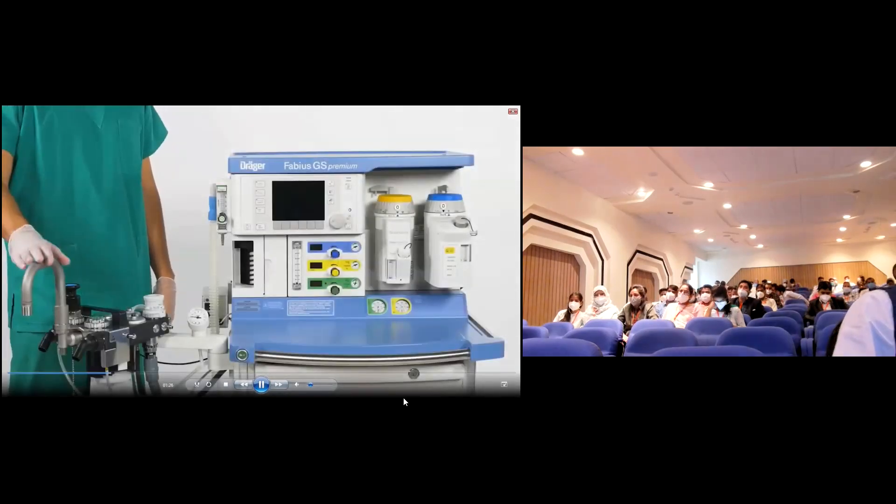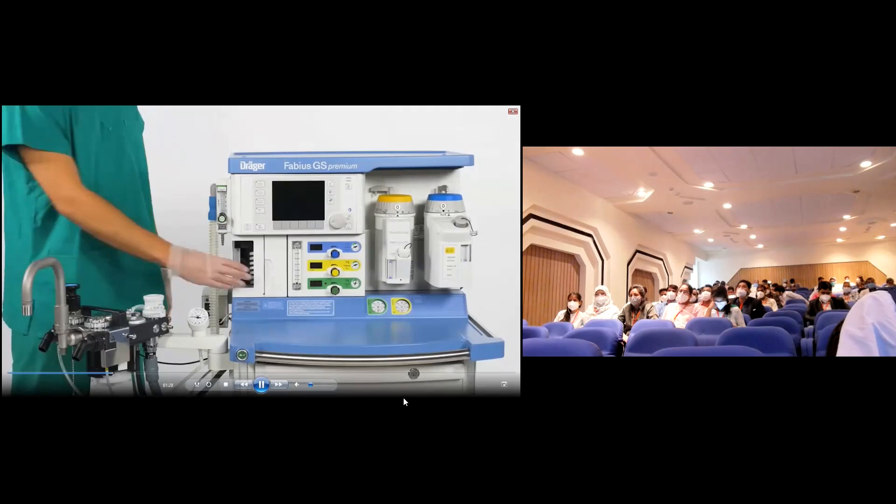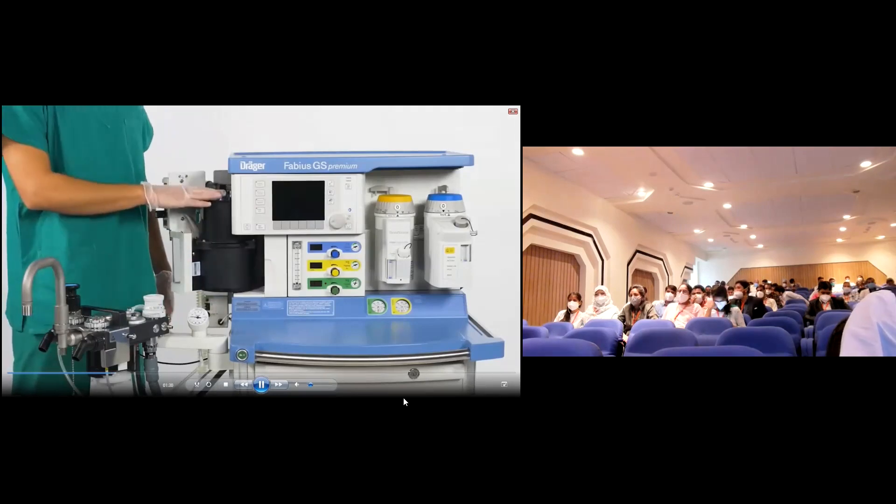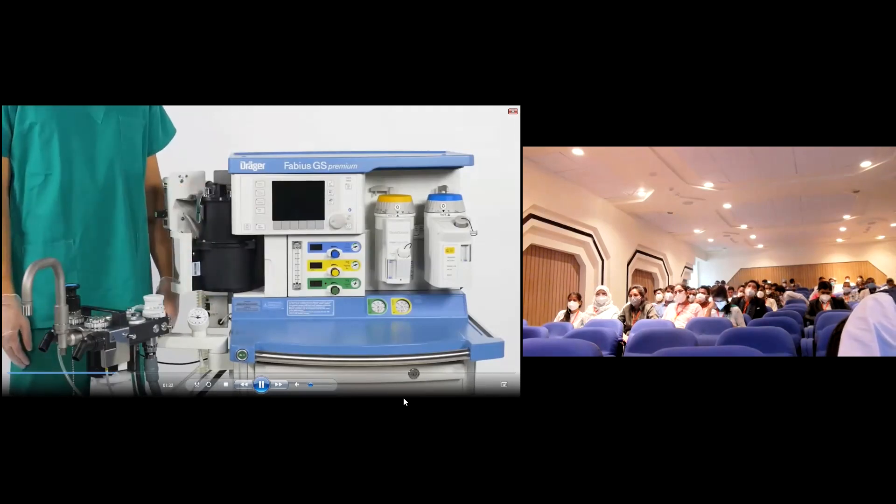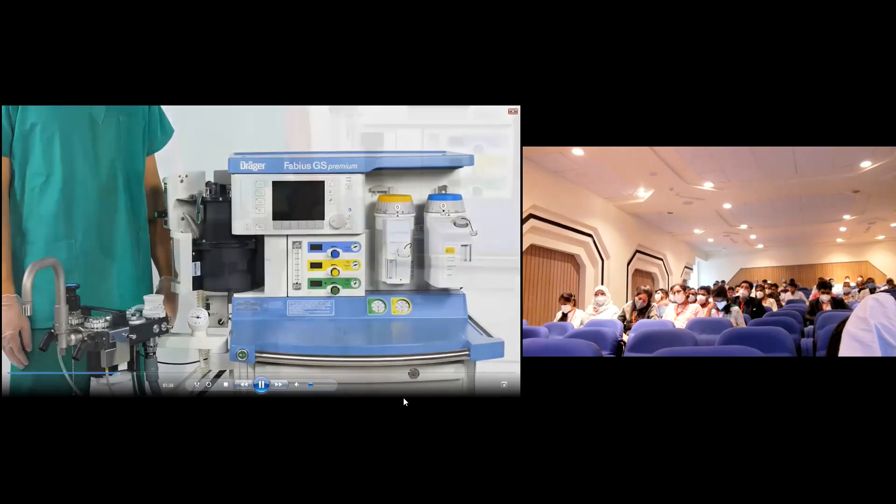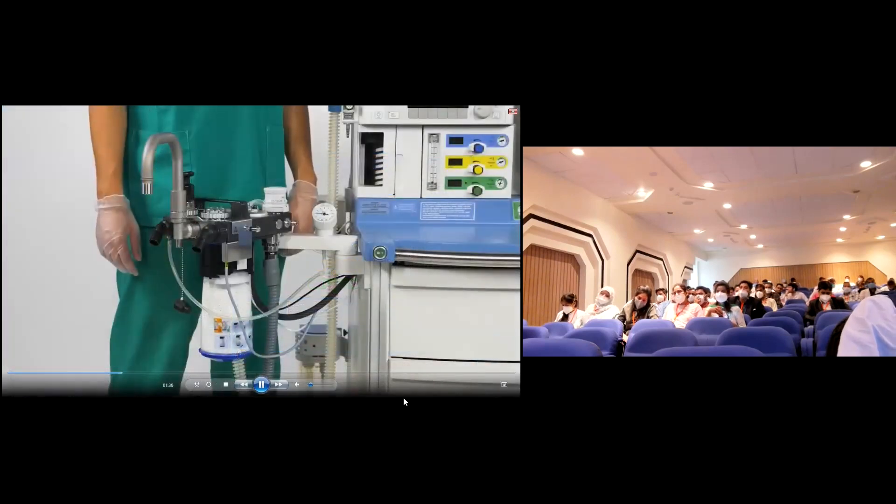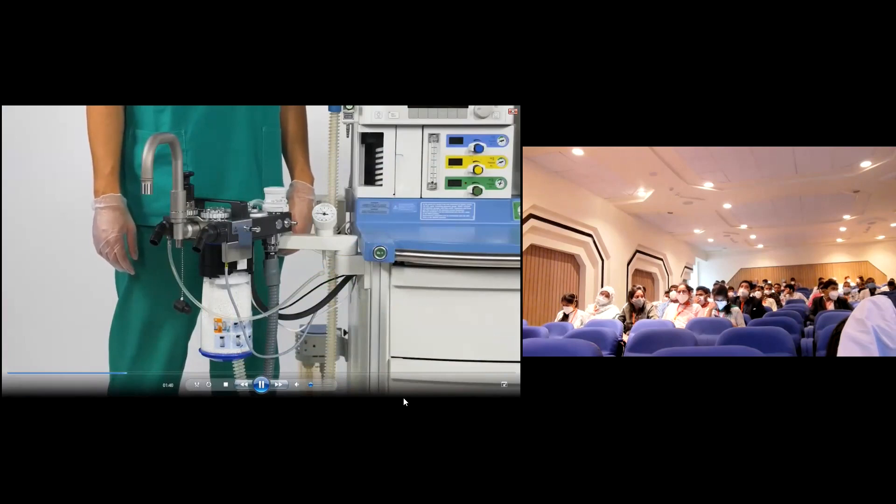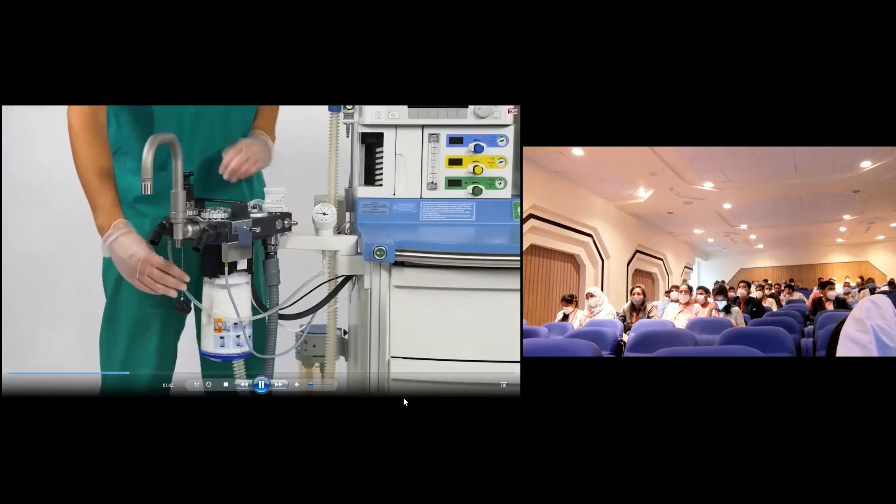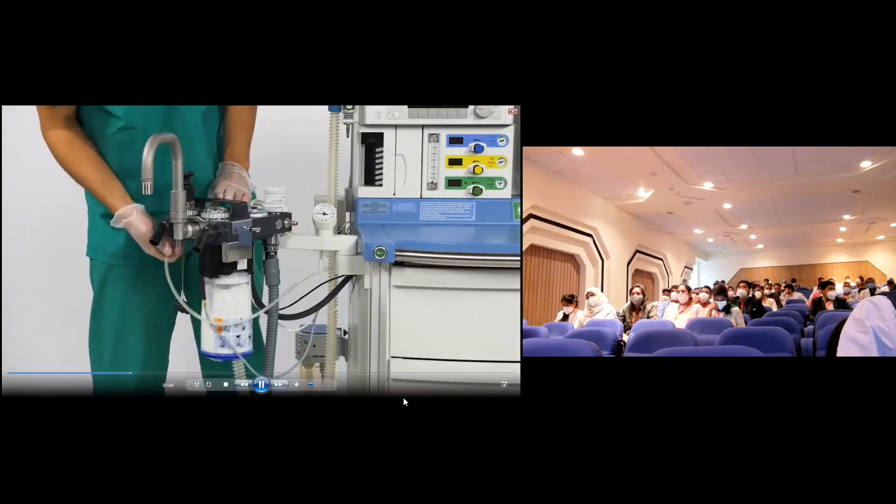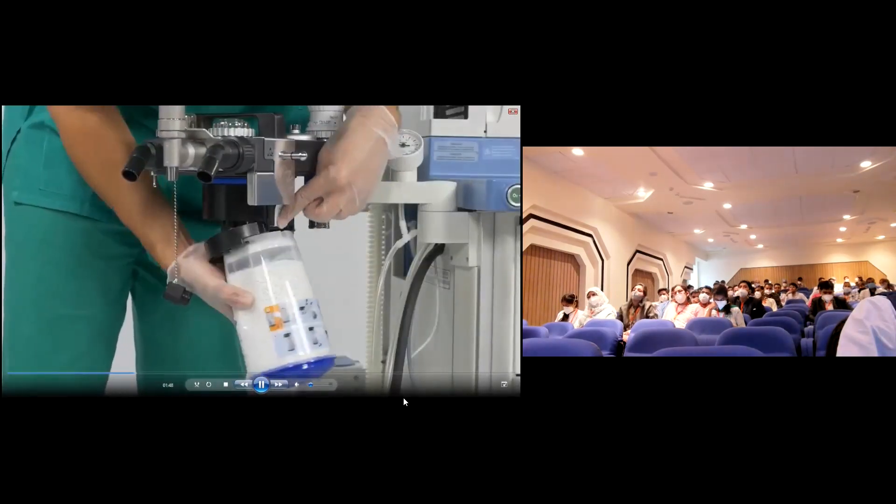All components of the Fabius GS Premium that are in direct contact with patient gases can be reprocessed using a cleaning and disinfection machine or manual disinfection. We will now guide you through the disassembly procedure which can be performed without any tools. The breathing system is called COSY, short for Compact Breathing System. First, disconnect all cables and hoses from the COSY and remove the CO2 absorber.